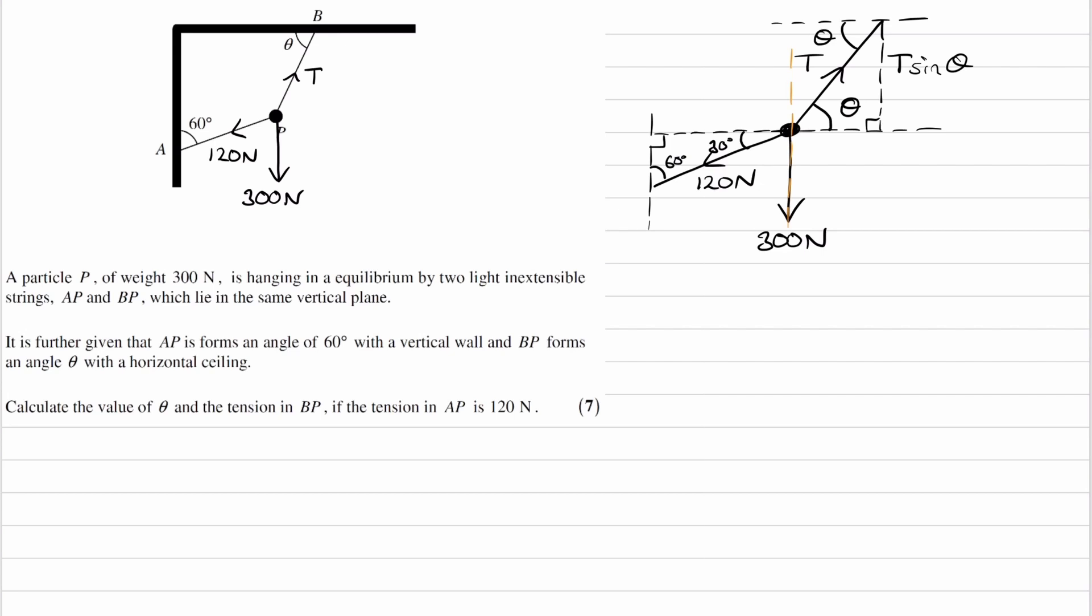The reason I know it's sine is because, well, if we think about Soh Katoa, sine involves the opposite. We have the hypotenuse T, so this will end up being T sine theta.